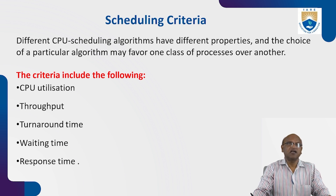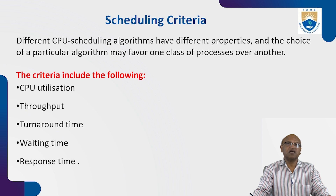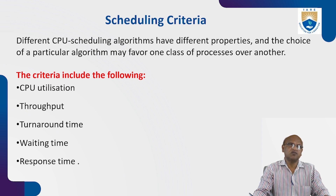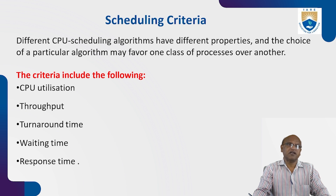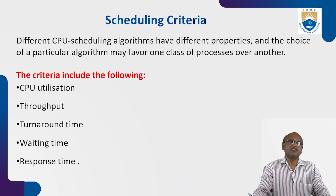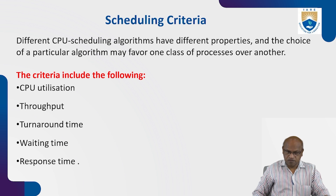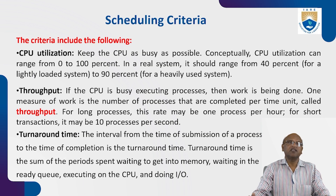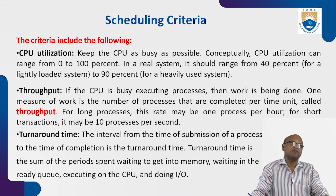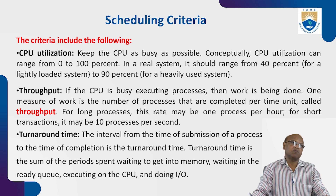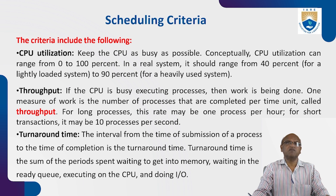Scheduling criteria: there are different CPU scheduling algorithms with different properties, and the choice of a particular algorithm may favor one class of process over another. The criteria include: CPU utilization — we must keep the CPU as busy as possible. Conceptually, CPU utilization can range from 0 to 100 percent. In real systems, it should range from 40 percent for a lightly loaded system to 90 percent for a heavily loaded system.